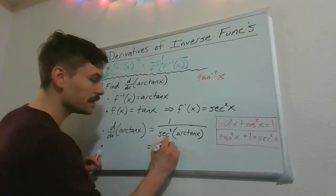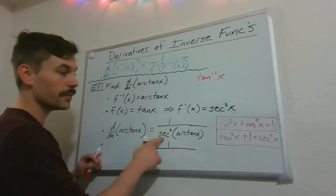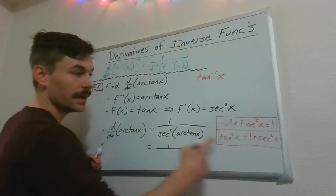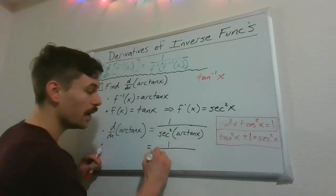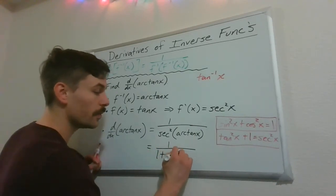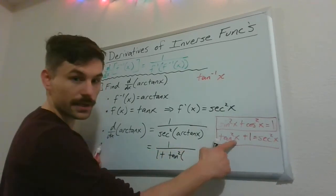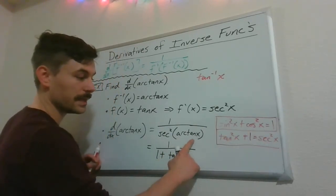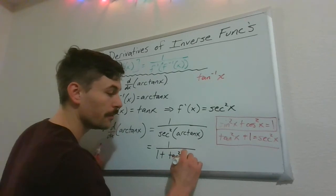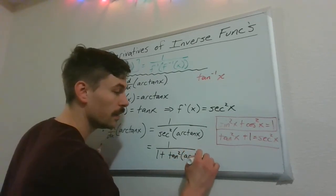So I'm going to replace secant squared of arctan of x. I now have a replacement for secant squared. So it's going to be 1 plus tan squared, not of x like in the original version of this, because we have something else on the inside. So tan squared of arctan x.